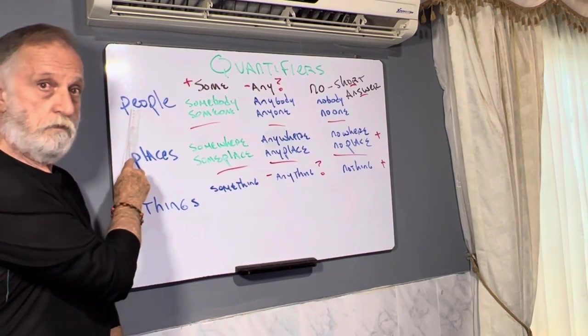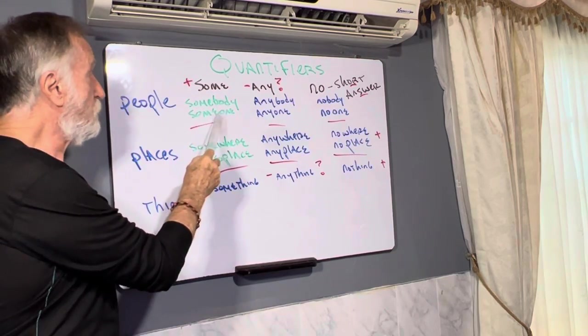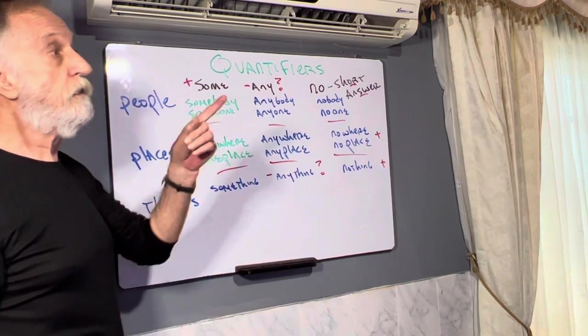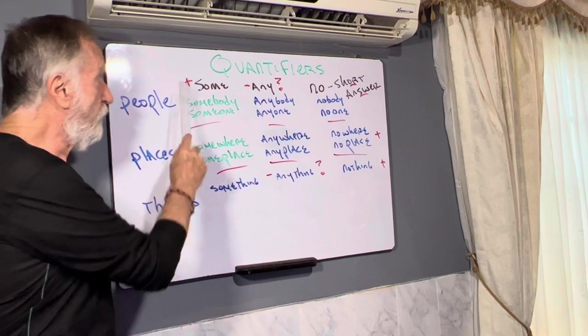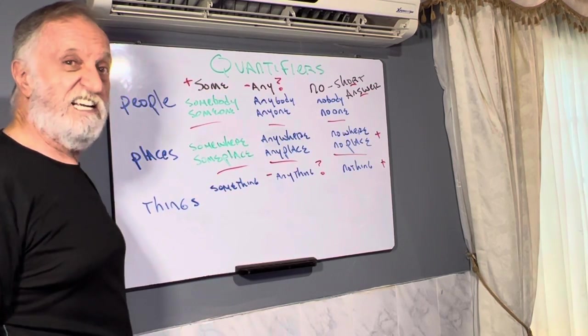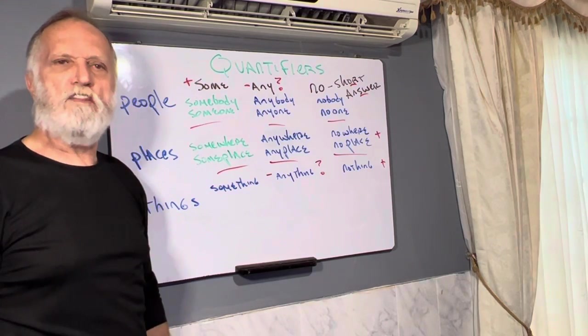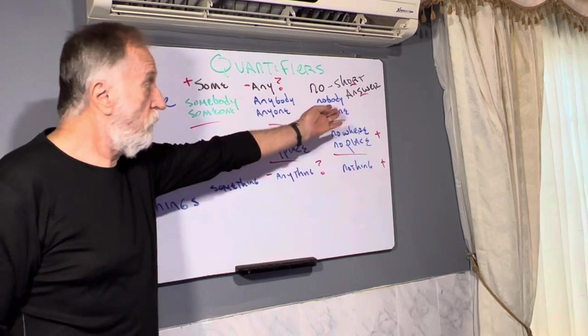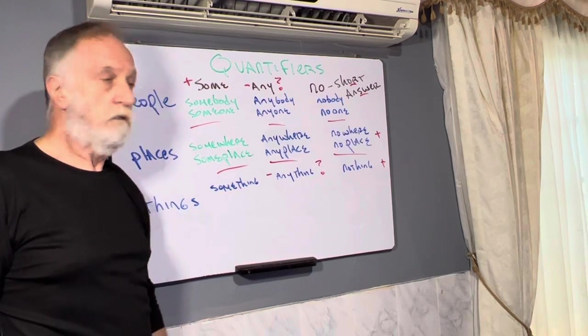People. Somebody, someone. Synonymous, the same thing. Hey, somebody's knocking at the door. Affirmative. People. Anybody. Anyone. And short answers. Who are you with? Who are you with? Nobody. No one. I'm not with anybody.